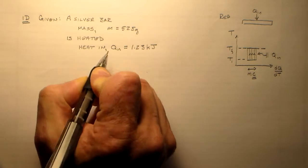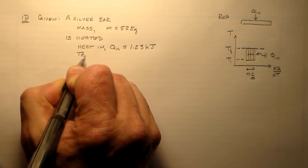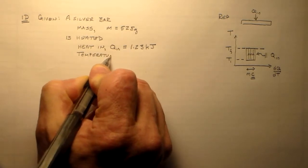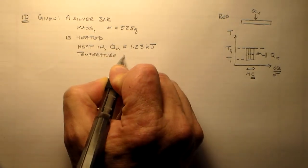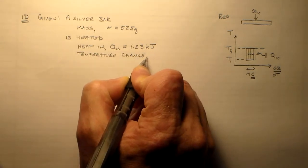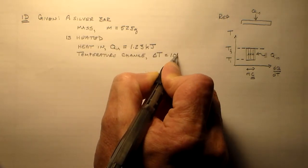So, we've got mass, we've got some heat in, and we've got a temperature change. And that temperature change, delta T, is equal to 10 degrees Celsius.